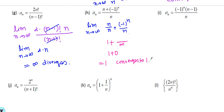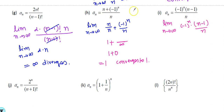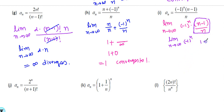For lim as n→∞ of (−1)^n · (n−1)/n: here the two pieces are multiplied together, not added, so you can't split them the same way. As n→∞, the piece (n−1)/n approaches 1, leaving lim as n→∞ of (−1)^n, which is +1, −1, +1, −1, ... and onwards. So this diverges by oscillation.